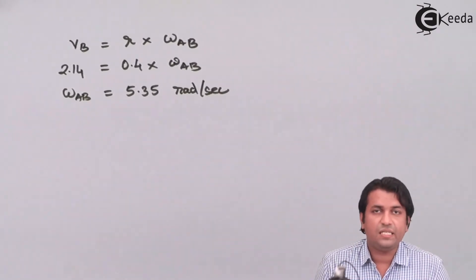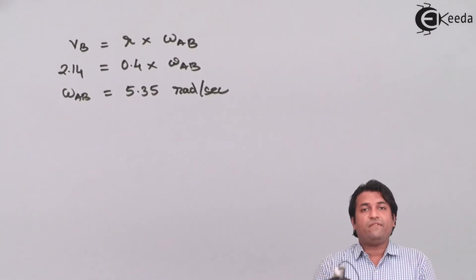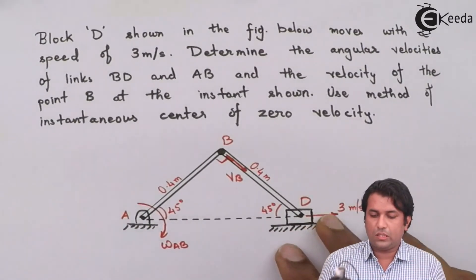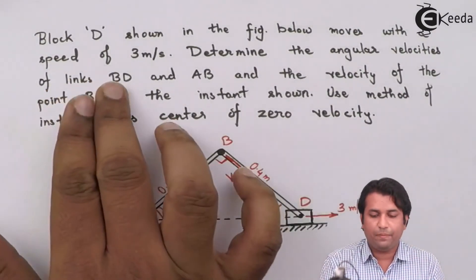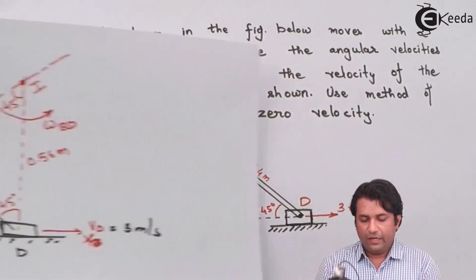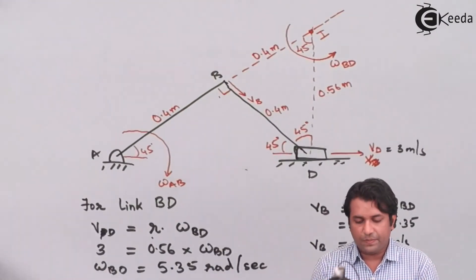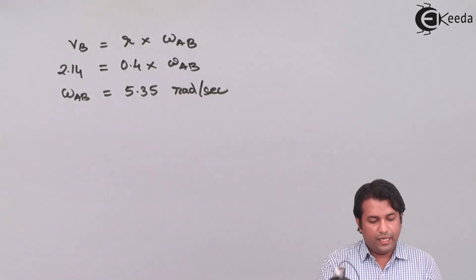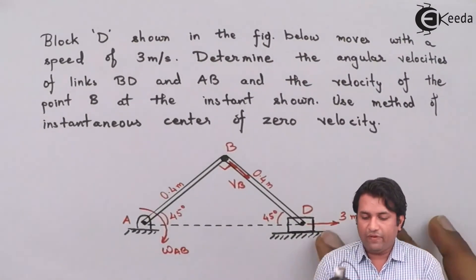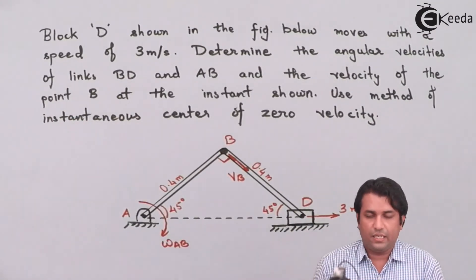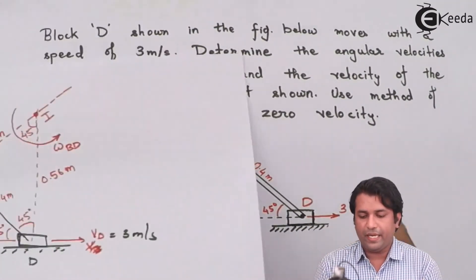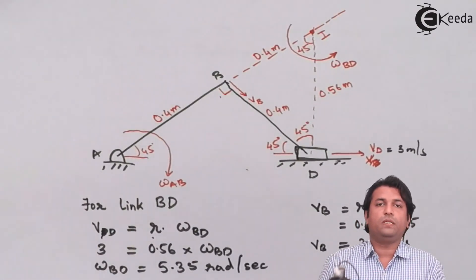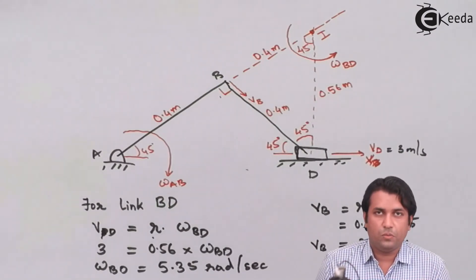So this is how we can find out the angular velocities and velocities. The question asked for the angular velocities of links BD and AB — both come out as 5.35 radians per second. It also asked for the velocity of point B at this instant, which is 2.14 meters per second. I hope this problem was straightforward. Thank you.